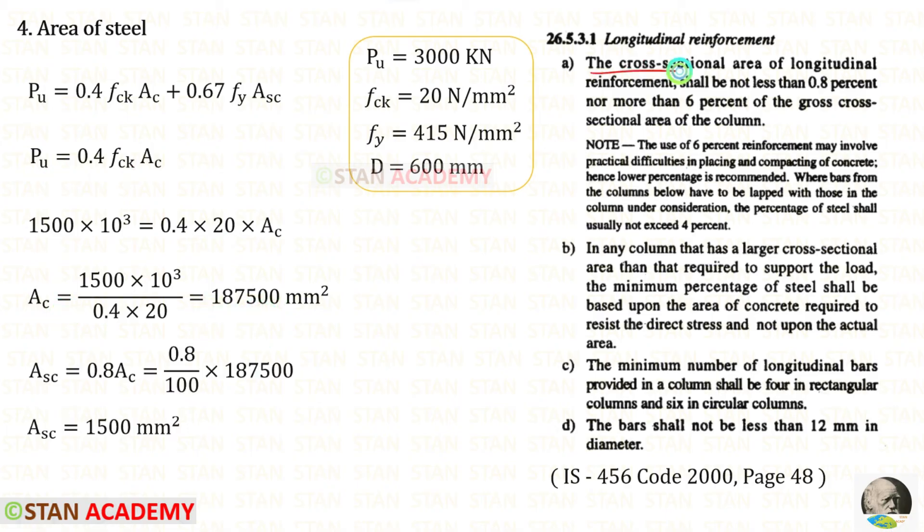We know that the cross-sectional area of longitudinal reinforcement shall be not less than 0.8% and not more than 6% of the gross cross-sectional area of the column. But here we have to design the percentage according to the area of the concrete, not as per the cross-sectional area. Let us assume that the area of the steel is 0.8 times Ac, so 0.8 upon 100 into Ac. In this way for Asc we will get 1500 mm².